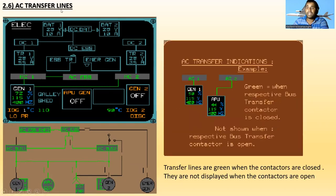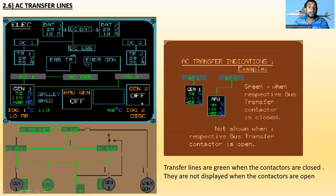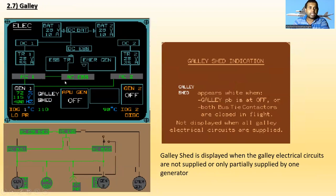Next is the AC transfer lines. For example, Generator 1 transfers to AC1 and APU transfers to AC2. Transfer lines are green when the respective bus transfer contactor is closed. They are not shown when the respective bus transfer contactor is open. In this example, Gen 2 is not supplying anything, but Gen 1 is supplying both AC Bus 1 and AC Bus 2.